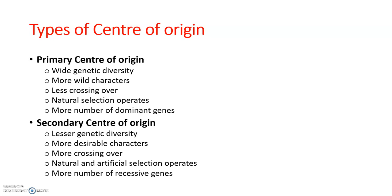Selection in the secondary center of origin is based on both natural and artificial selection. Plants in the secondary center have more recessive genes, while plants in the primary center have more dominant genes. Hopefully these lectures are helping you understand genetic resources and conservation. For my next videos, please stay tuned to my channel, MH Biology. Goodbye.